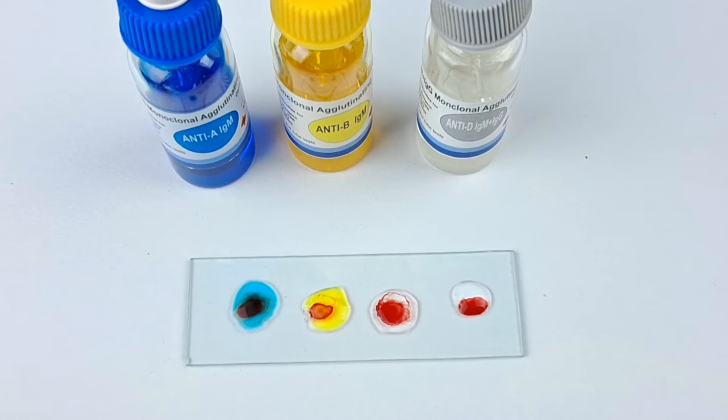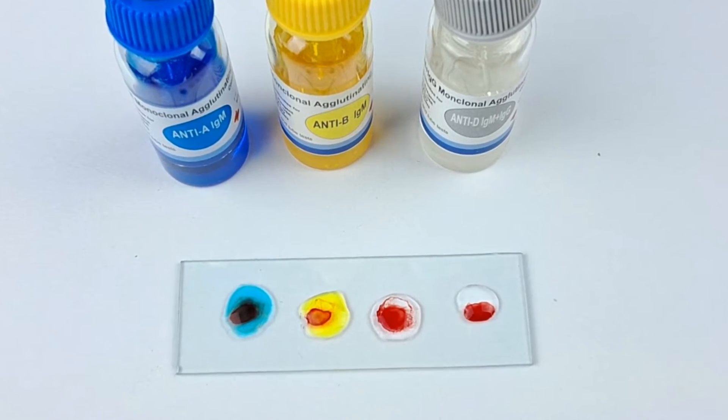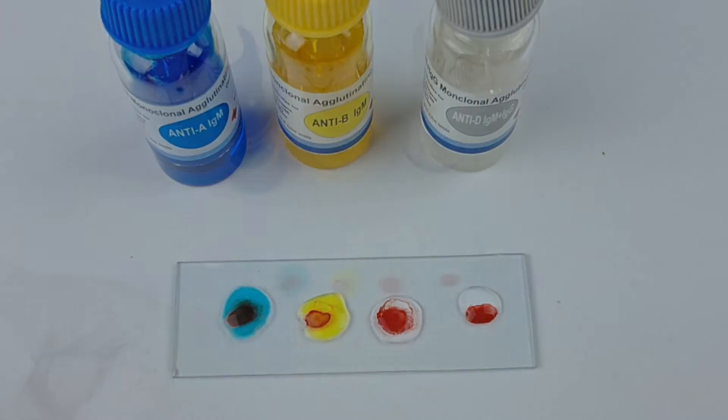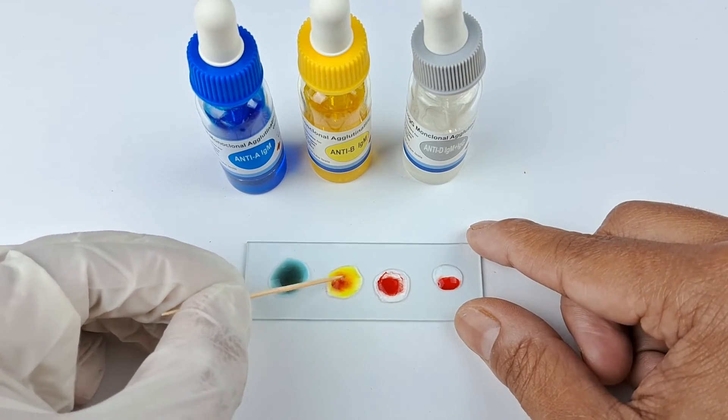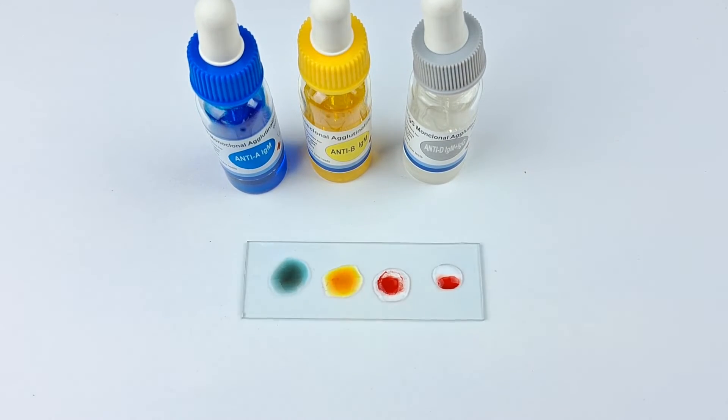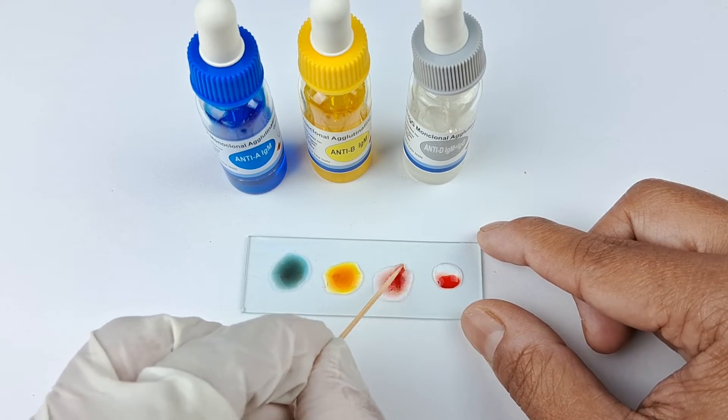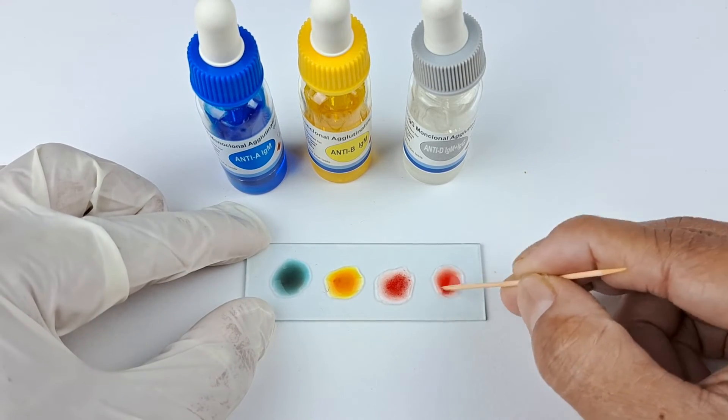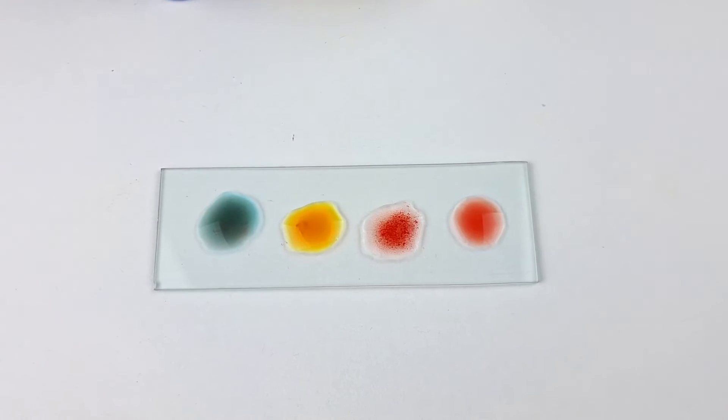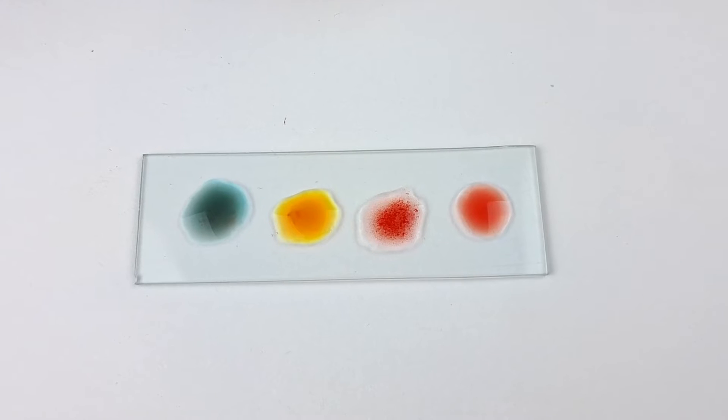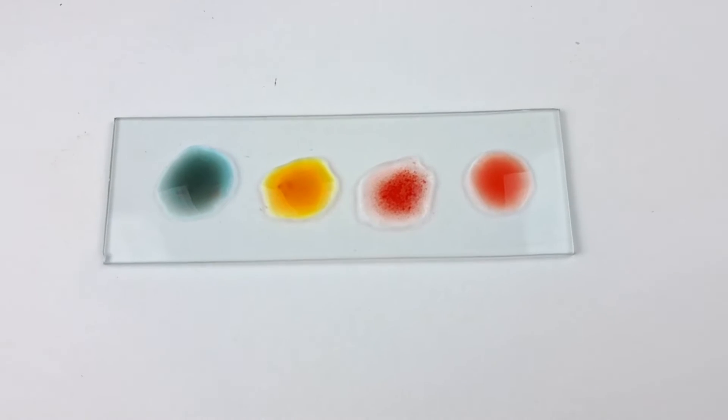Once the three antisera and normal saline have been added to the test and control blood samples, quickly and thoroughly mix the four blood drops individually using four different toothpicks or match sticks. Do not and never use the same mixing stick to mix all four drops. Once you have individually mixed all the reagent blood drops, leave the slide undisturbed for 30 seconds to a couple of minutes.